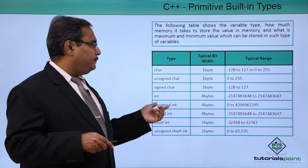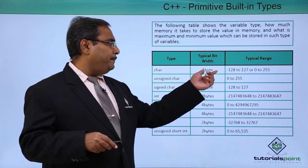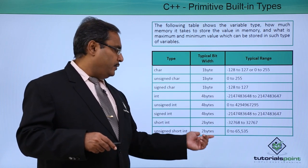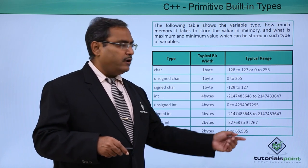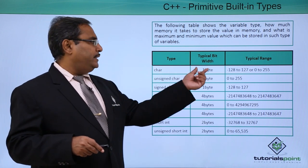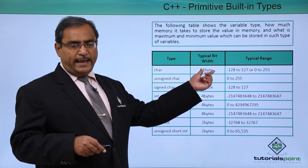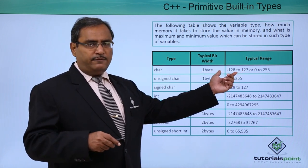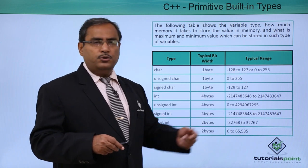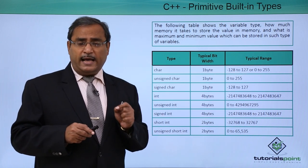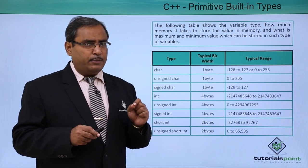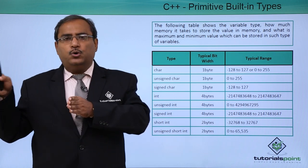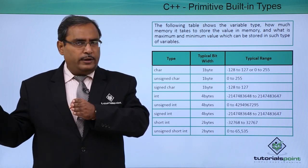Here we have the respective types, the typical bit width, and the typical range of values. If you consider character, it is occupying 1 byte of memory space against those variables which will be having the type character, and it can extend from minus 128 to plus 127, because 8 bits can have 2 to the power of 8, that means 256 number of combinations. From minus 128 to 0 and then 0 to 127, plus 127 is the total range.